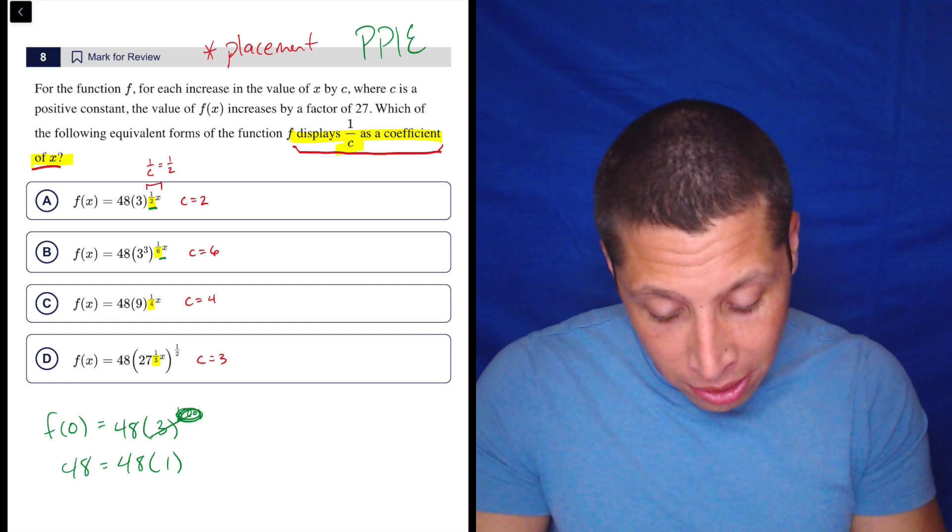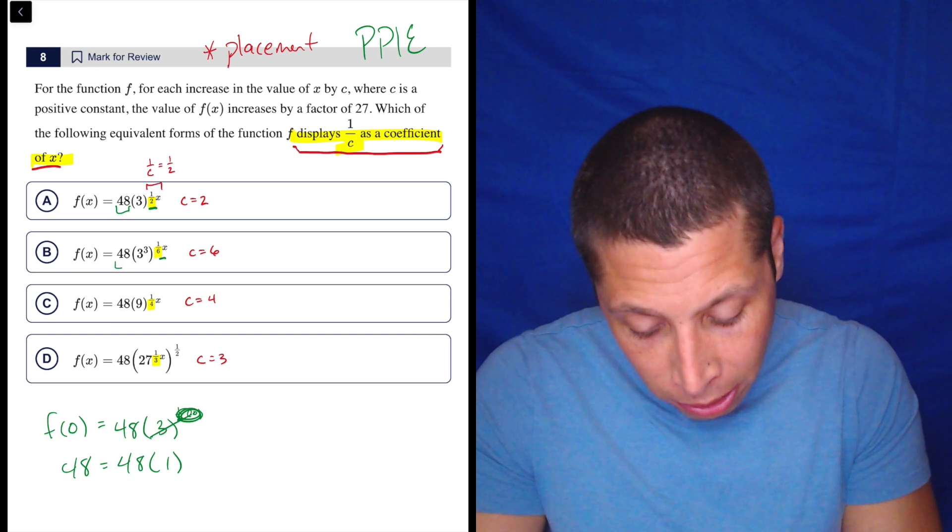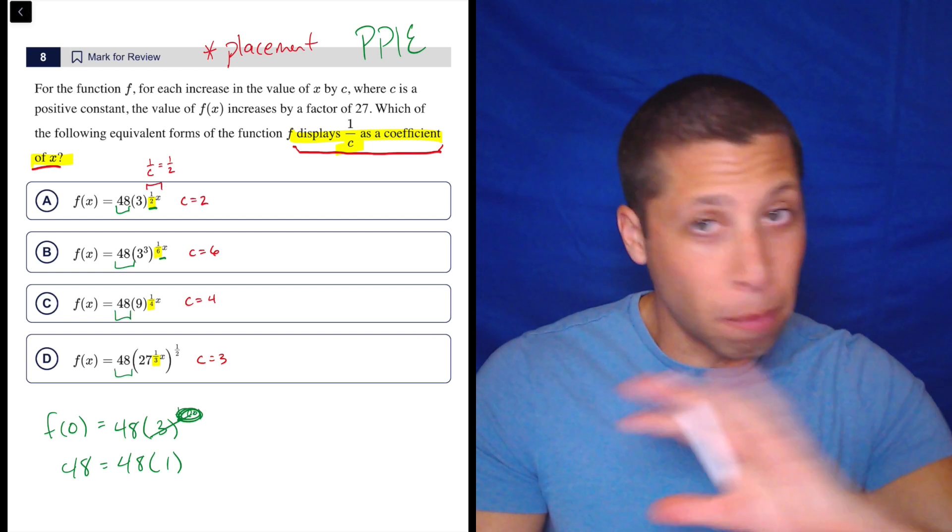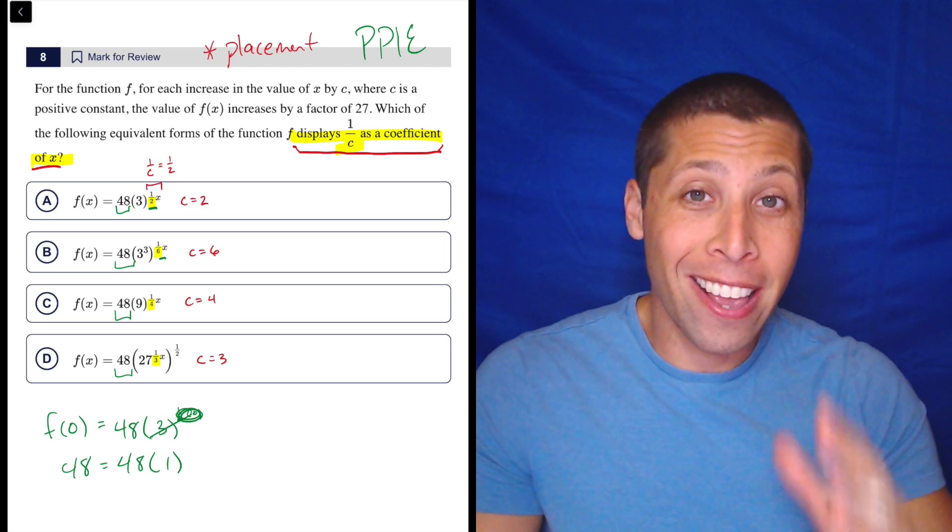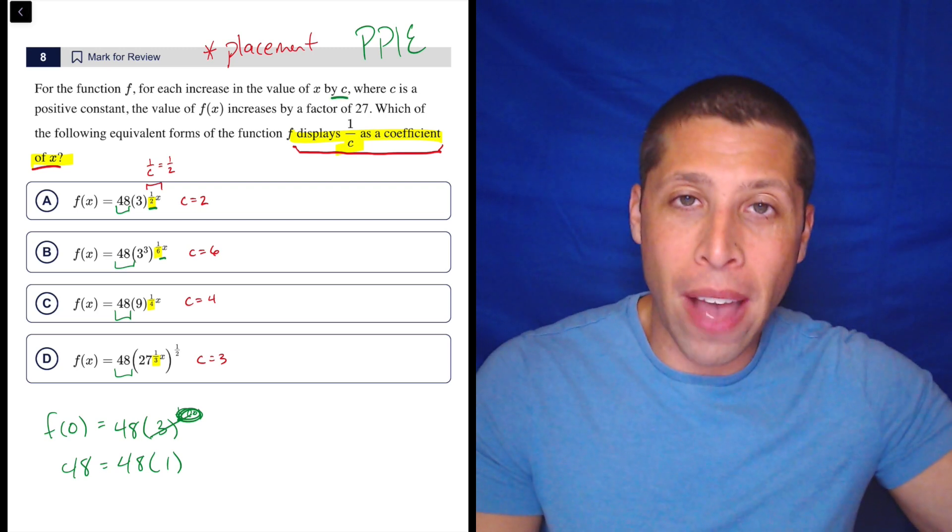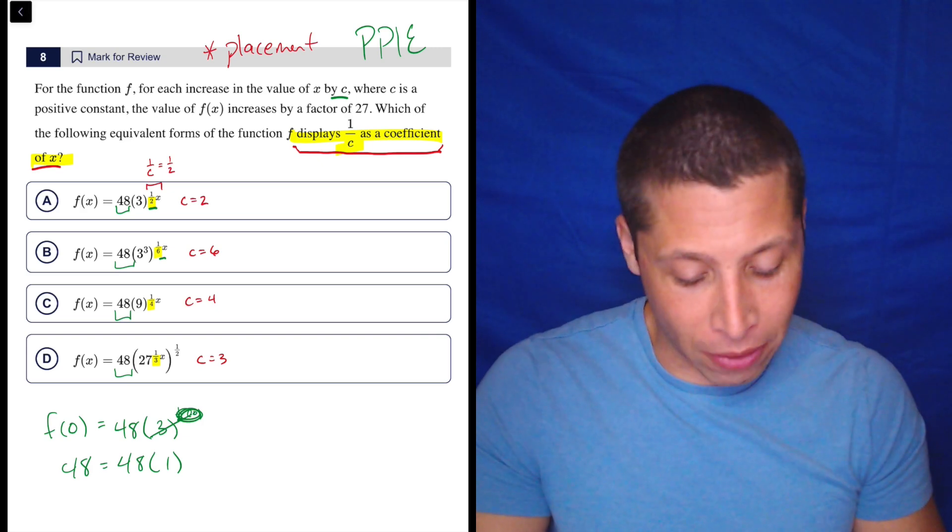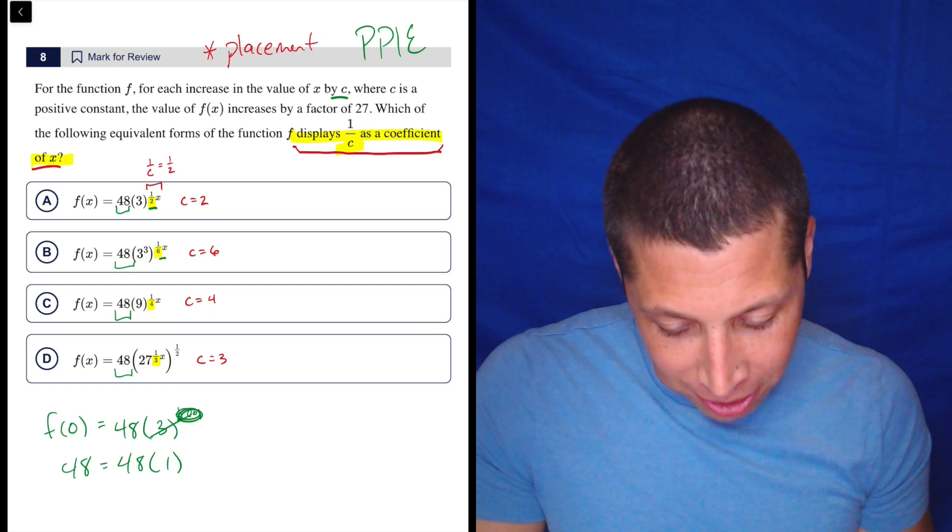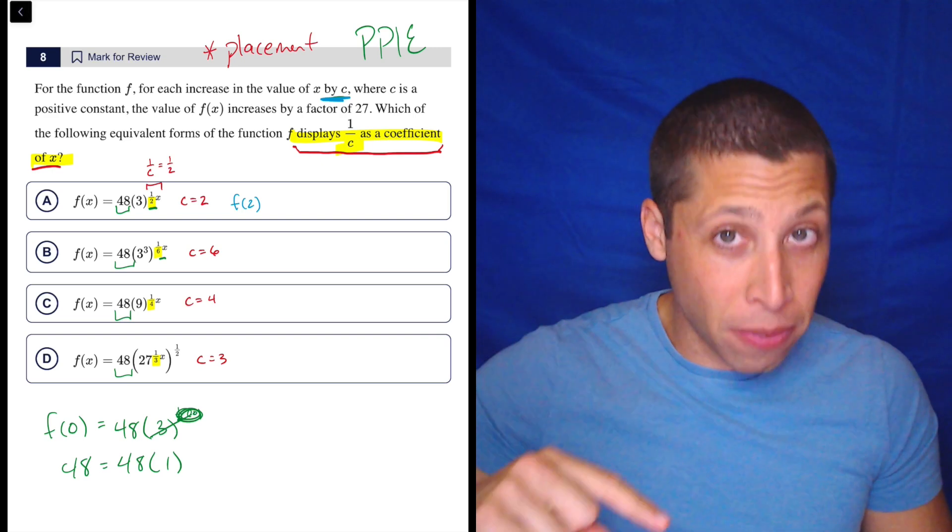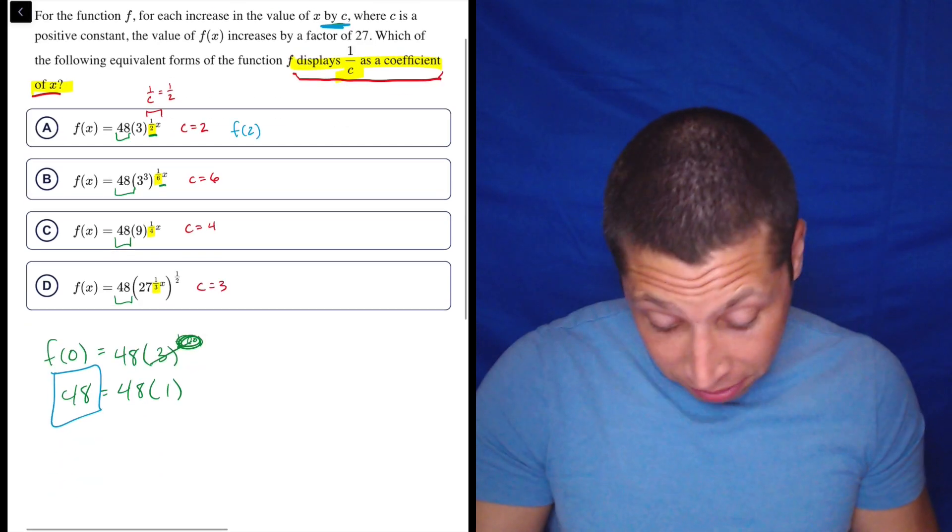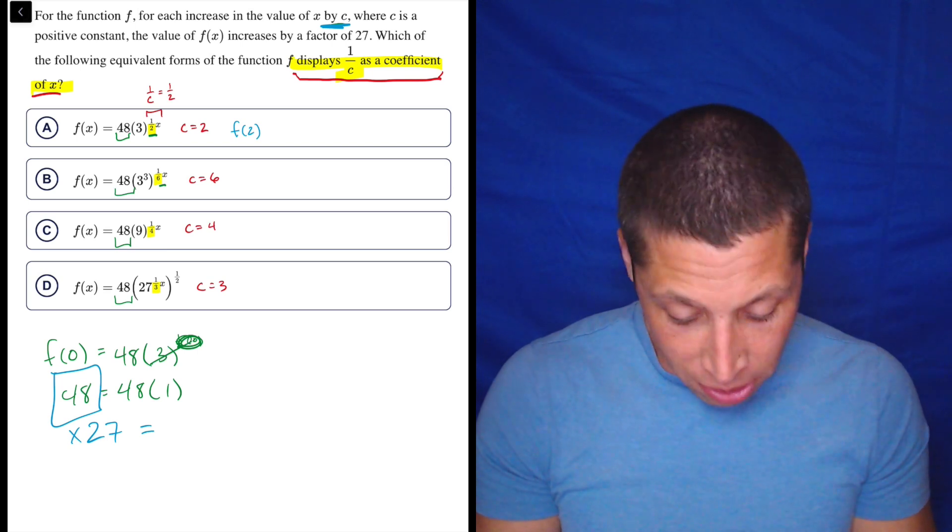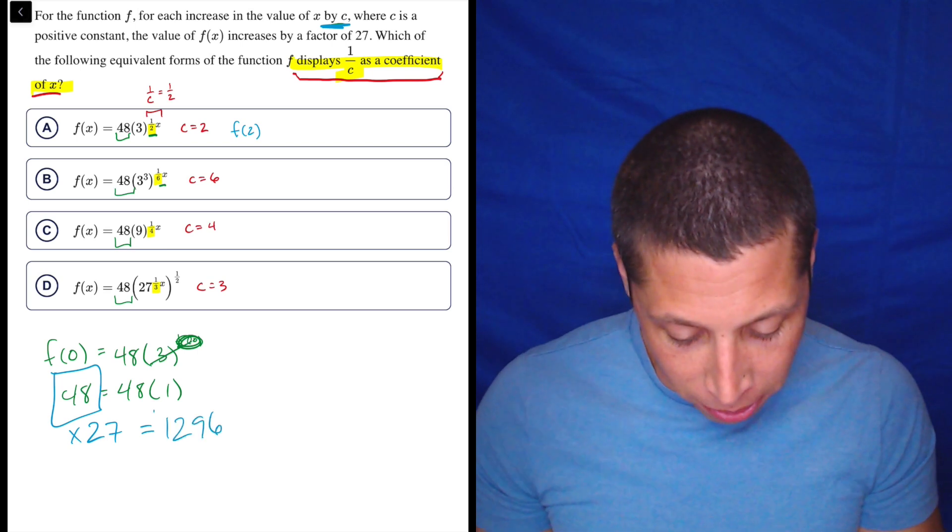And if we do that for all of these choices, we're going to keep getting 48, because all of this stuff is raised to the 0, meaning that 48 is going to be multiplied by 1. When we raise it to the 0, the same thing is going to happen here and here. So all of these are going to be 48. Meaning when we increase the value of x by our c, we should increase f(x) by 27, by multiplying by 27. So let's try that. So the final part of this question is we're going to increase by c. Let's do that for choice A. That means we're now going to do f(2). Because we have f(0), which we know is 48, and we're going to multiply that by 27. 48 times 27 is 1296. So I'm looking for 1296, that's the magic number that's going to make me very happy and solve this question.